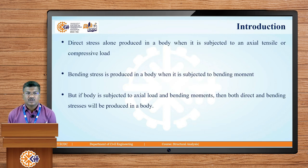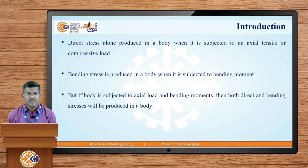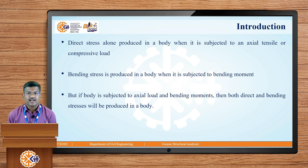First, an introduction about the direct and bending stress. Direct stress alone is produced in a body when it is subjected to an axial tensile or compressive load. Bending stress is produced in a body when it is subjected to a bending moment only. But in actual cases, both axial load and bending moments are acting on the body simultaneously. If a body is subjected to axial load and bending moment, then both direct and bending stresses will be produced in the same body.